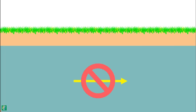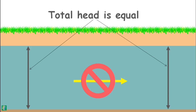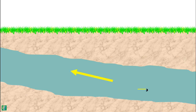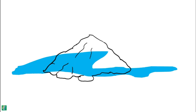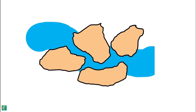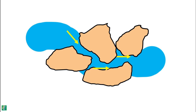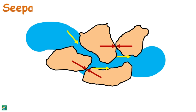Water does not flow if two points have the same energy or have inadequate head difference. Water may flow even against gravity if point A is at a higher hydraulic head than point B. As water flows through the soil, the surface of the soil particles offers resistance to the flow. In turn, water also pushes the soil particles and applies a drag to them in the direction of its motion. This drag increases the inter-particle forces. This force applied by the water on the soil particles is called seepage force.